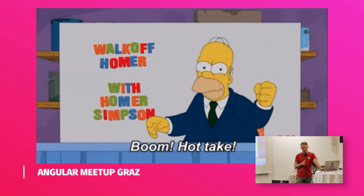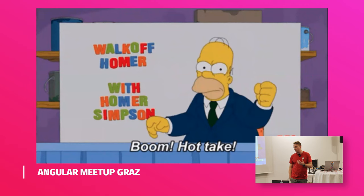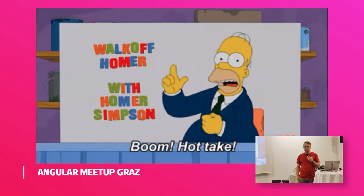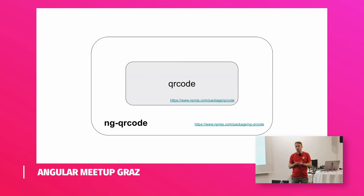So let me start with a hot take. In general, I recommend avoiding third-party libraries for Angular as much as possible — especially those very small, simple wrapper libraries around other JavaScript libraries. For example, the ngqr code is a basic wrapper around the QR code package. It does not much more than wrap the QR code package with a simple directive and a component and passes through the configuration. Why not just use the QR code package yourself directly and wrap it? It keeps you in full control of this dependency.